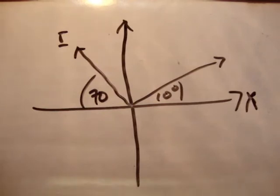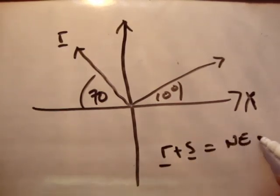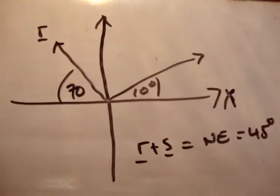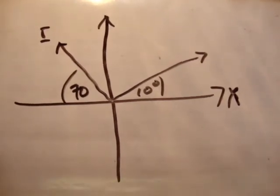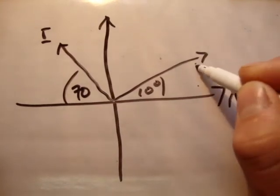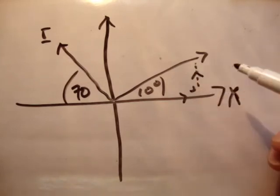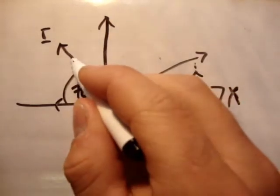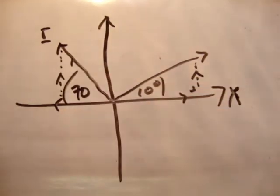Find the magnitude of s, correct to one decimal place, if r plus s is equal to north east. Well, if it's equal to north east, it's at an angle of 45 degrees. So what do we do with all these questions? We resolve our resultant vector into its component unit vectors — namely this vector in the i-hat, this vector in the j-hat, this vector in the negative i-hat, and this vector in the positive j-hat.